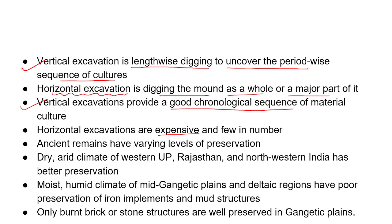Ancient remains vary in levels of preservation based on climate. In dry, arid regions such as Rajasthan and northwestern areas, remains are better preserved. In moist areas like the mid-Gangetic plains or deltaic regions, remains do not survive as well. Only burnt bricks or stone structures are well preserved in the Gangetic plains. Climate is very relevant to the preservation of historical remains.